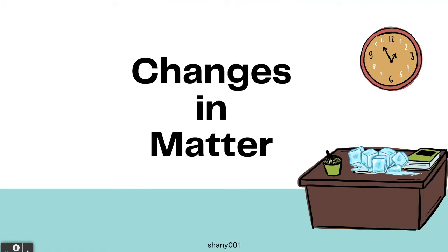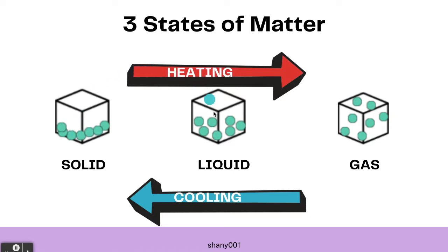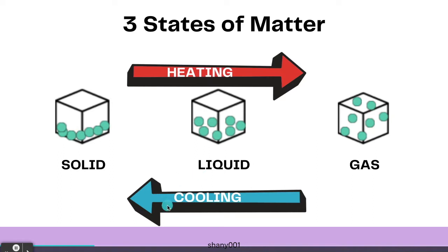Now it's time to observe the changes in matter. We all know that there are three states of matter: solid, liquid, and gas. If you want to change the state from solid to liquid to gas, you will need to heat the object. If you want to change the state from gas to liquid to solid, you will need to cool the object.